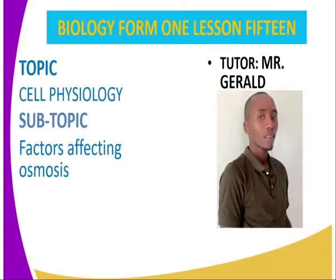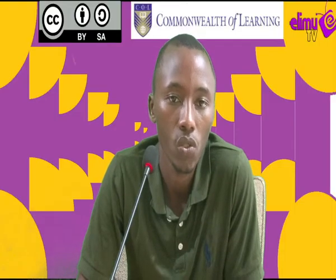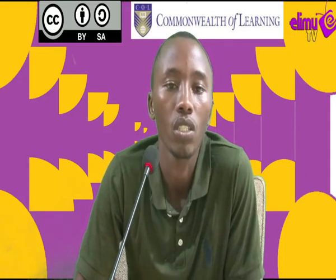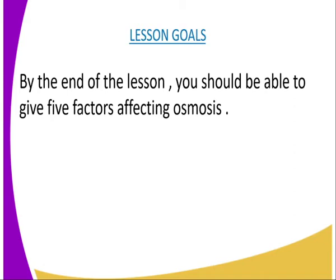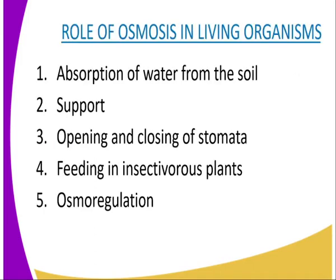On our previous lesson, we looked at osmosis in depth, and now we are going to have factors affecting osmosis. Just to do a recap, we said that osmosis is a movement of water molecules from a region of their high concentration to a region of their low concentration. By the end of the lesson, you should be able to give five factors affecting osmosis.